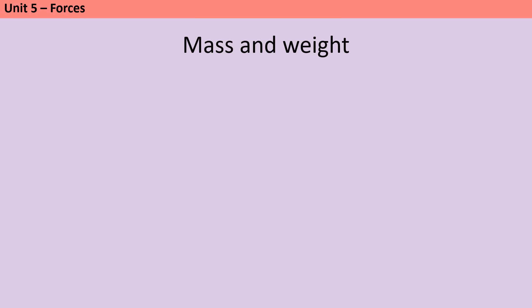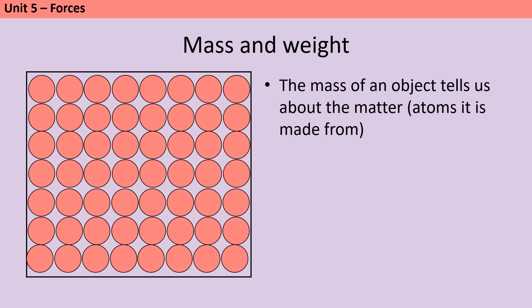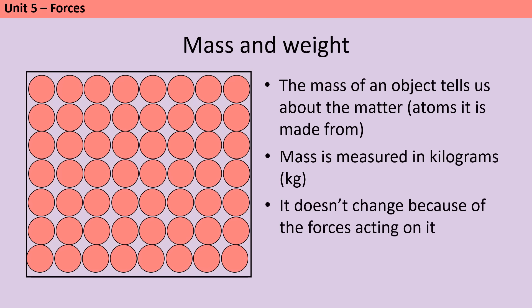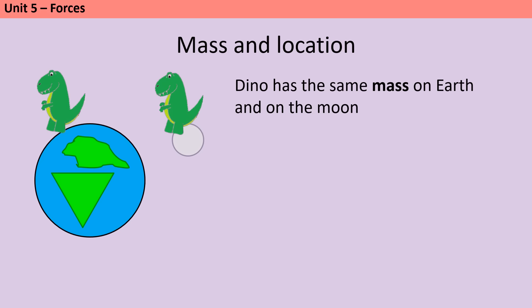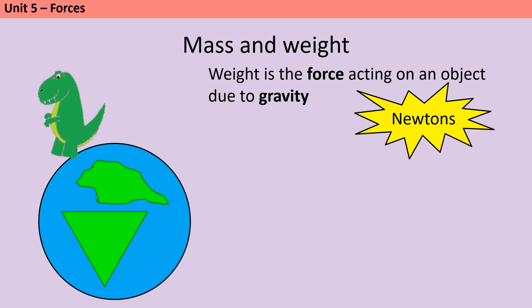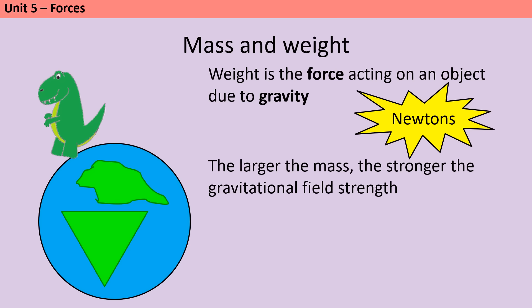Mass tells us about how much matter or how many atoms an object is made from. Mass is measured in kilograms. It isn't affected by forces and it doesn't depend on where you are. Just because a dinosaur has moved between the earth and the moon doesn't mean his mass has changed because he's still made of the same number of atoms. Any object that enters a gravitational field has a force called weight acting on it, which is measured in newtons. Gravity doesn't just affect planets, but the strength of a gravitational field is determined by the mass of an object.